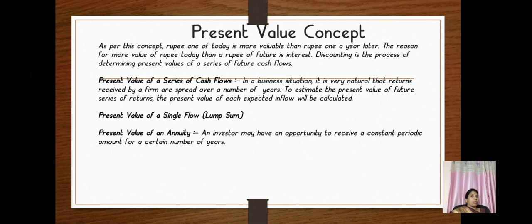Under time value of money, we have two techniques: the discounted technique and the compound technique. Under the discount technique, we look at the present value concept. The present value concept involves finding the present value of money when the future value is given. Under present value, we have: present value of cash flows, present value of simple flow, and present value of an annuity.